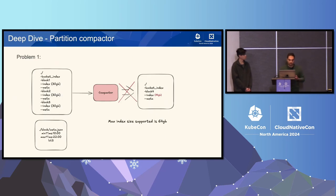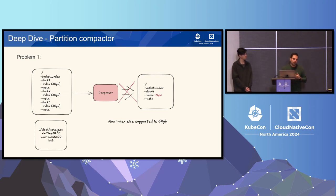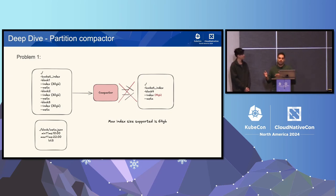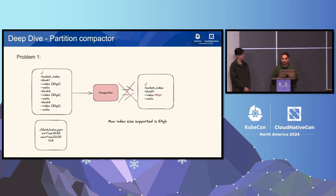So why are we doing the partition compactor? We have two problems with compaction today. The first is index size: TSDB only allows a max index size of 64 gigabytes. If you have three blocks each with a 30 GB index, the merged result could exceed 64 GB — say 70 GB — and the compaction will fail, forever. To mitigate this so far, we added a no-compaction marker, which skips that block in the grouper, but there's nothing more we can do — it stays there permanently.